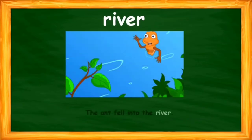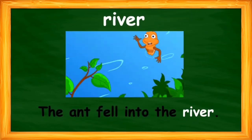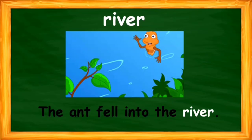Look at the word — the word is 'river'. Please repeat after me: river. What does 'river' mean? River refers to a stream of water flow. Look at the image — you can see blue water. I have made a sentence with the word 'river': the ant fell into the river.